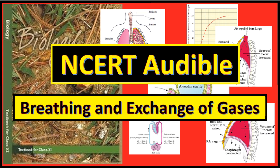Exchange part is the site of actual diffusion of oxygen and carbon dioxide between blood and atmospheric air. The lungs are situated in the thoracic cavity which is anatomically an airtight chamber. The thoracic chamber is formed dorsally by the vertebral column, ventrally by the sternum, laterally by the ribs and on the lower side by the dome-shaped diaphragm. The anatomical setup of the lungs in the thorax is such that any change in the volume of thoracic cavity will be reflected in the lungs or the pulmonary cavity, as we cannot directly alter the pulmonary volume.